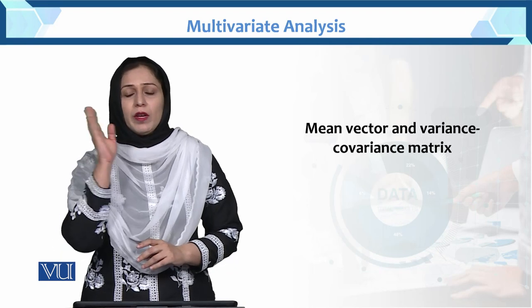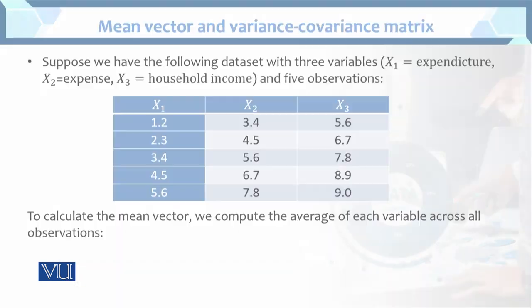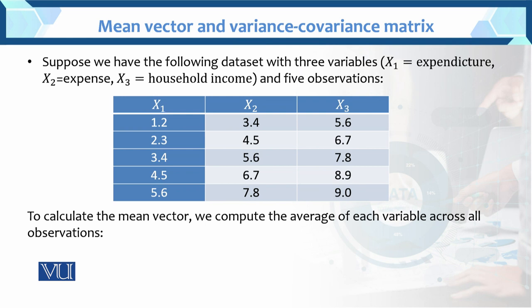A mean vector and variance-covariance matrix — I have to find this data. This is the example of the mean vector and variance-covariance matrix. Suppose we have the following data set with three variables. These are hypothetical variables which we have given ourselves. That is, x1 is the expenditure, x2 is the expense, and x3 is the household income. And five observations.